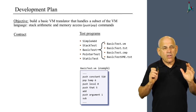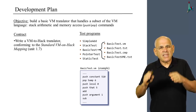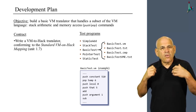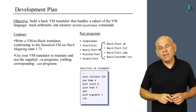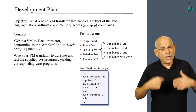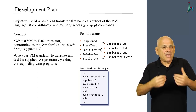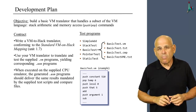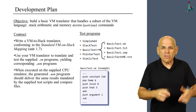Here's the contract: your job is to write a VM2Hack translator which conforms to the standard VM2Hack mapping described in unit 1.7. You have to use the VM translator to translate every one of the five VM files supplied in this project, generating an assembly program for each. When you execute the resulting assembly program on the CPU emulator, the output file produced by the test script has to be the same as the supplied compare file. If this is the case, you pass the test and can go on to translate the next VM program.